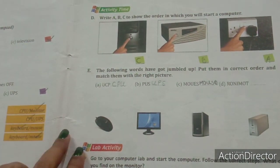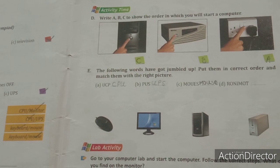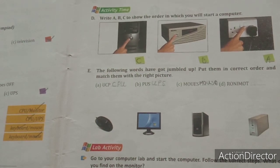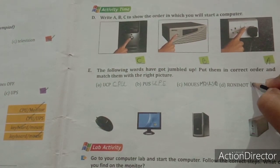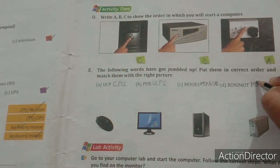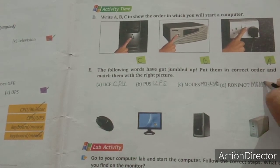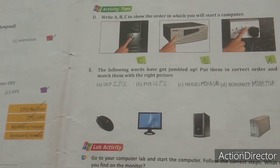The last jumbled word has the letters R, O, N, I, M, O, T. Is there such a word as written? No. What is the correct word? Monitor — M-O-N-I-T-O-R. Monitor.